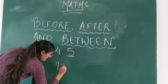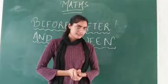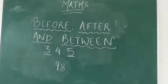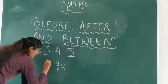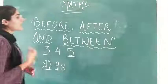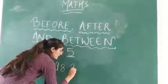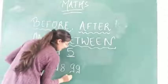Now let me ask a little harder question — ninety-eight. What comes before ninety-eight? Try thinking. Ninety-seven comes before ninety-eight. And what comes after ninety-eight? Ninety-eight ke baad mein kya aata hai? Ninety-nine. So ninety-seven, then ninety-eight, then ninety-nine.